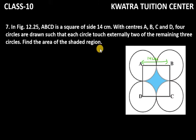With centres A, B, C and D, four circles are drawn such that each circle touches externally two of the remaining three circles. Now you can see that all the circles are attached externally. The shaded region is the blue part, which is the area we need to find.